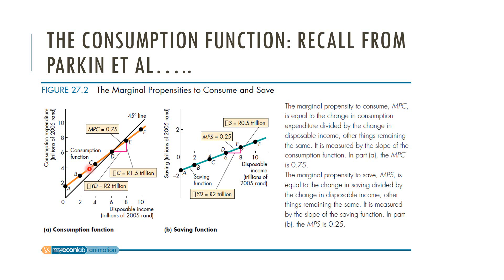This diagram is taken from your first-year textbook, Parkin, and it shows you a consumption function plotted. You've got consumption on the vertical axis and income on the horizontal. So it's upward sloping, showing you that consumption rises as income rises. It's not a one-to-one relationship — that would be given by your 45-degree line, which shows all points at which consumption is exactly equal to income. This line is flatter than the 45-degree line, showing that as income rises by one rand, you don't spend that entire rand on consumption; some of it will be saved.